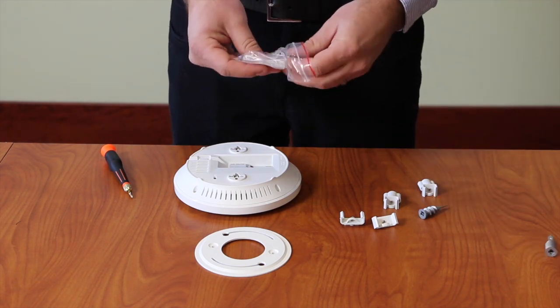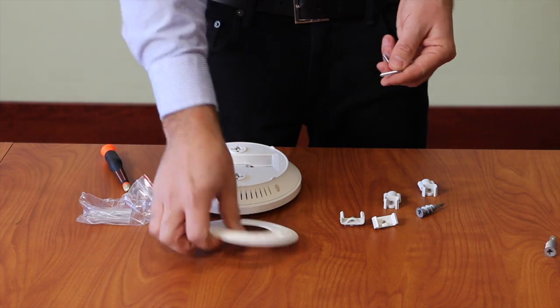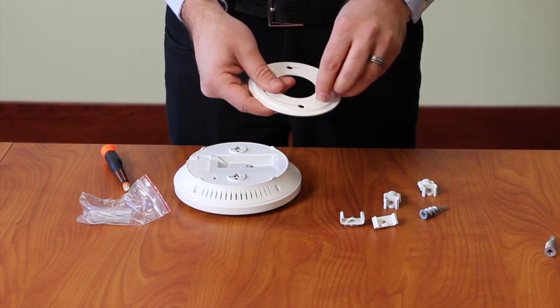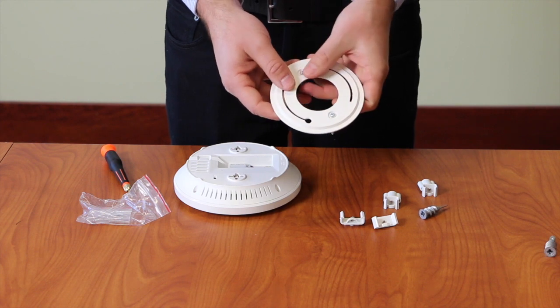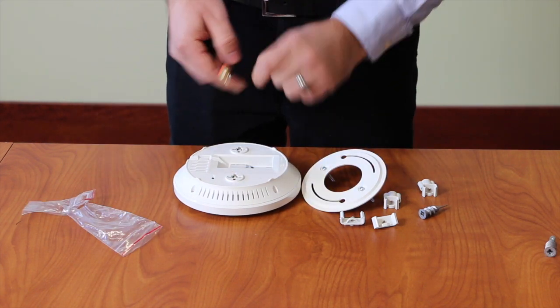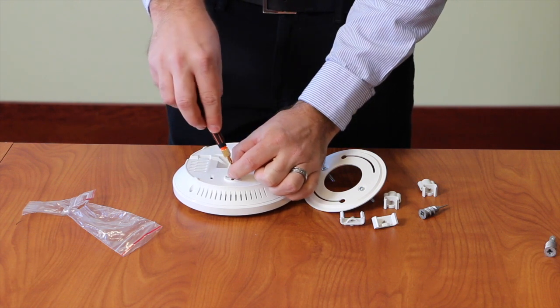The first step would be mounting this plate to the wall. Use the long screws included and put those into place there. You can use the smaller screws that are included in the bag to simply screw into the access point.